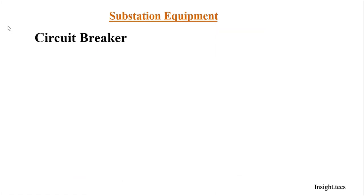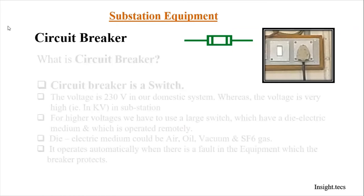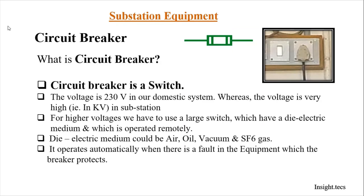The next equipment is the circuit breaker. Circuit breakers are placed after the isolator in the system. Circuit breakers are like switches and require a dielectric medium to quench the arc, because a circuit breaker is an on-load device. At home, voltage levels are very low, so sparks can be easily quenched by a normal switch or even an MCB.